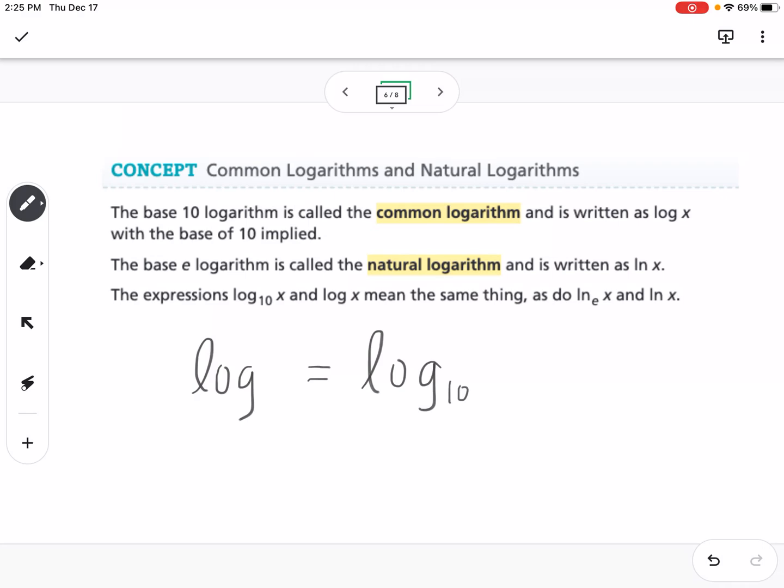Sometimes you'll see the 10 written, sometimes you won't, but it's one of those that you need to know those are equivalent. As far as natural log goes, you're going to see it written as LN, natural log, and natural log is really log base E. You're never going to see it written as log base E, you're always going to see it written as natural log, but recognizing that that's what that represents is helpful.